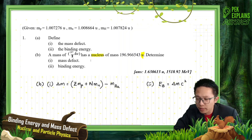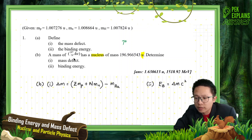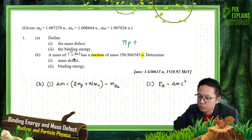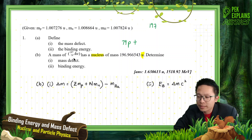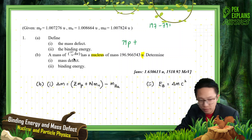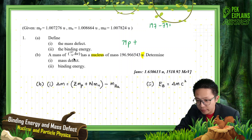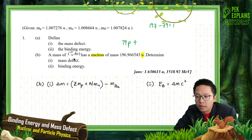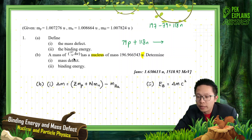From the periodic table, the atomic number of gold is 79, so there are 79 protons. The number of neutrons is the mass number minus the atomic number: 197 minus 79 gives us 118 neutrons. So 79 protons plus 118 neutrons form the aurum nucleus.